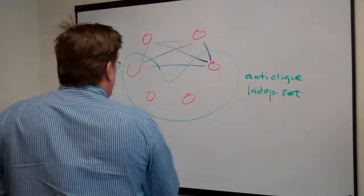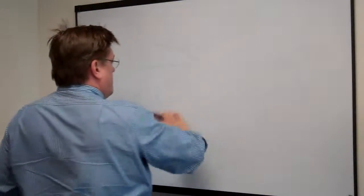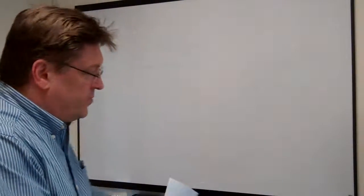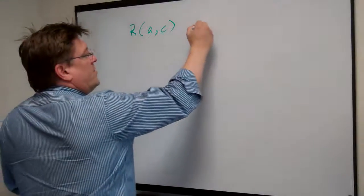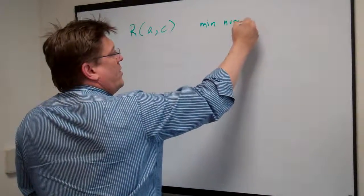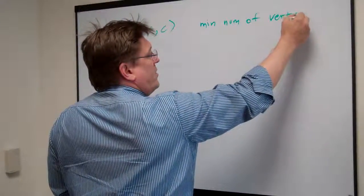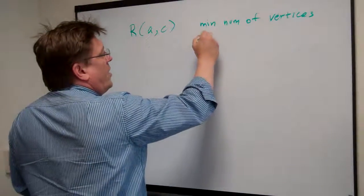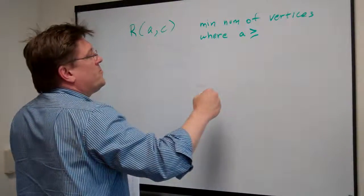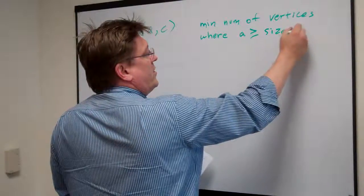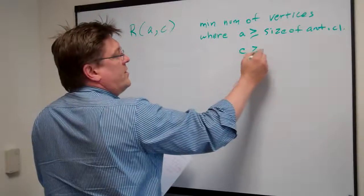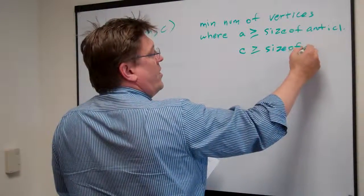The next thing we have to understand is what a Ramsey number is. A Ramsey number R(A, C) is the minimum number of vertices — an integer — needed so that any graph on that many vertices must contain either an anti-clique of size at least A or a clique of size at least C.